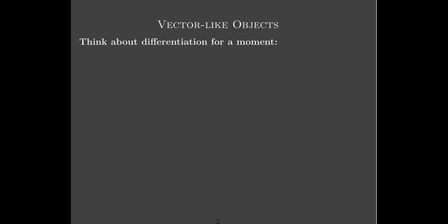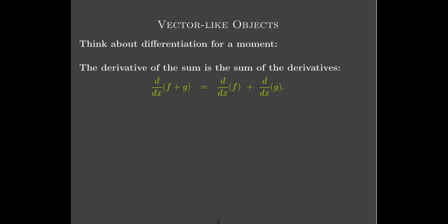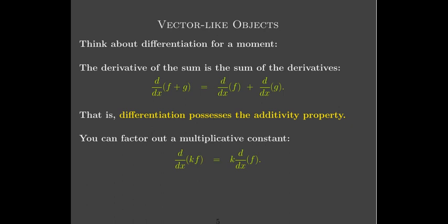Think for a moment about differentiation. We learned in first semester calculus that the derivative of the sum is the sum of the derivatives, and we can factor out a constant from the derivative. So differentiation possesses both the additivity property and the homogeneity property — it's acting like a linear transformation. But it doesn't act on vectors in Euclidean space; it acts on functions.